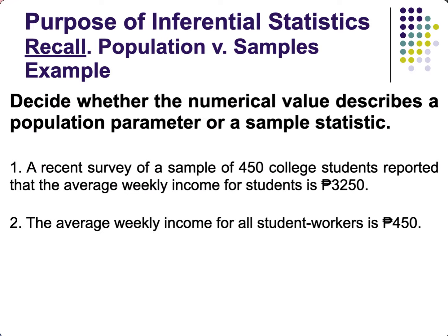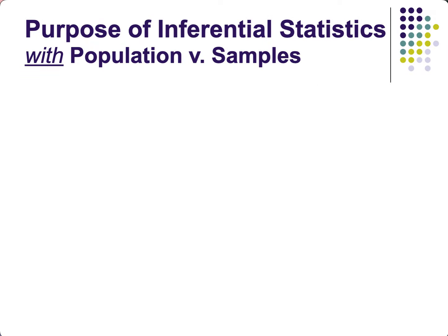Let's have a quick exercise: decide whether each numerical value describes a population parameter or a sample statistic. Number one — a recent survey of a sample of 450 college students reported an average weekly income of 3,250 pesos; since this comes from a sample, it is a sample statistic. Number two — the average weekly income for all student workers is 450 pesos; since 'all' refers to everybody, this is a population parameter.